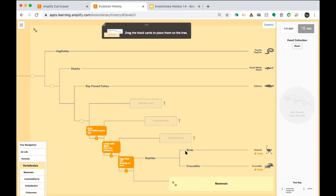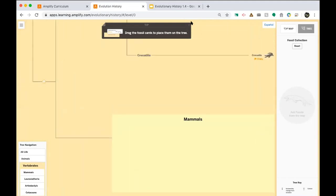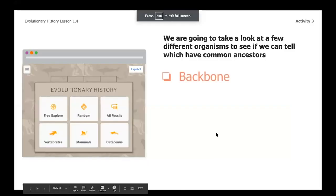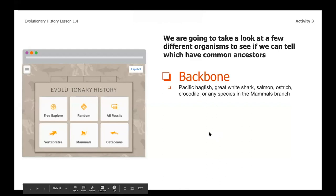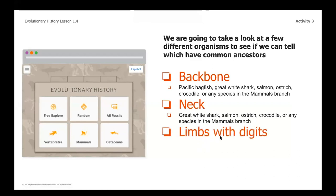For neck and limbs, anything to the right on the tree will have limbs — birds, crocodiles, and anything in the mammals tab. As the evolutionary tree progressed, the number of organisms with a neck and backbone became fewer, and as we got into organisms with limbs with digits, the list became even smaller.